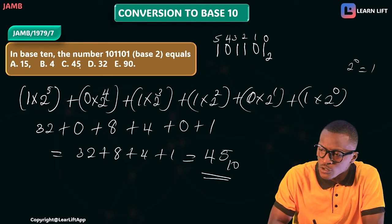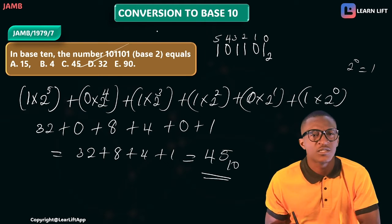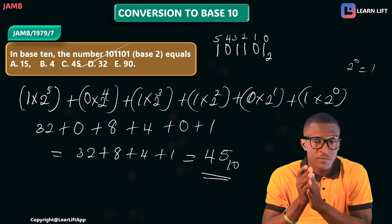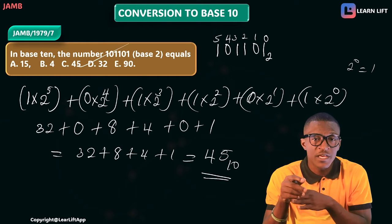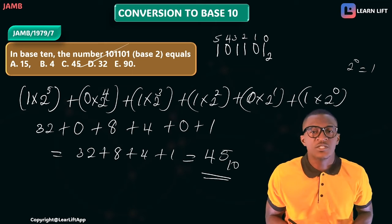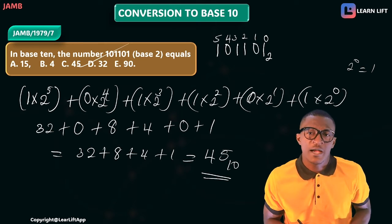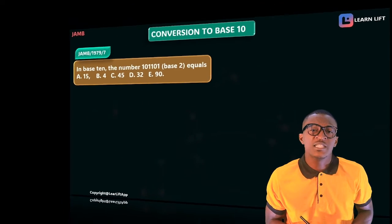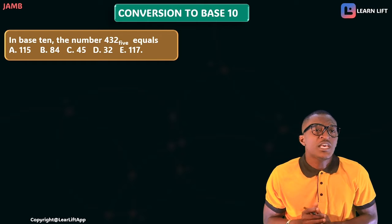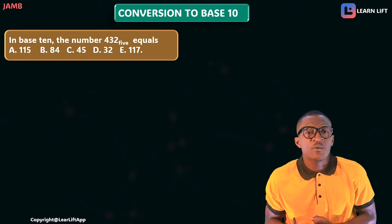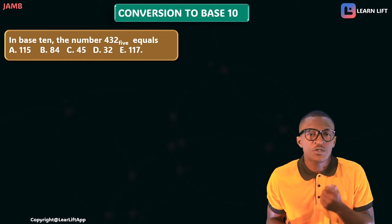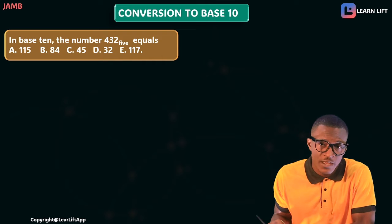The answer is 45 in base 10. If you check the options, that's option C. Very simple — multiply each digit by the base raised to its power, then add them together. Let's take the next question.